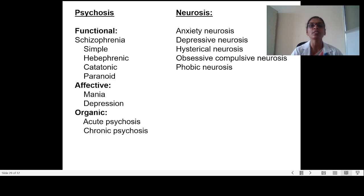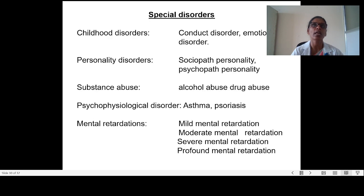Under neurosis in the Indian classification there are anxiety neurosis, depressive neurosis, hysterical neurosis, obsessive-compulsive neurosis, and phobic neurosis. The third category — special disorders — is divided into childhood disorders, personality disorders, substance abuse, psychophysiological disorders, and mental retardation.